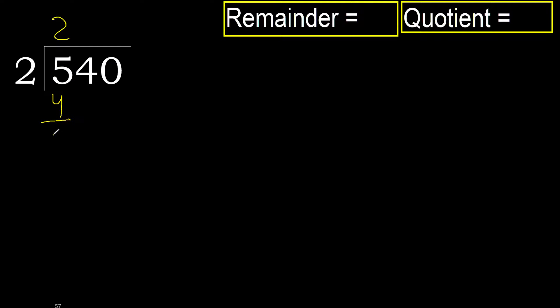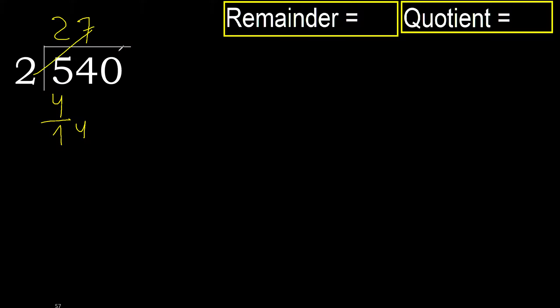Subtract. Next: 14. 2 multiplied by 8 is 16 — 16 is greater. Multiplied by 7: 14 is not greater.